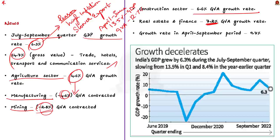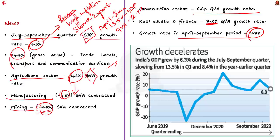Overall, in the first half of the 2022-23 financial year — that is April 2022 to September 2022 — India's growth rate was around 9.7%, and our Chief Economic Officer is happy about India's performance. Now, in this discussion I mentioned two economic terms: GDP and GVA. Let us see what these terms mean.